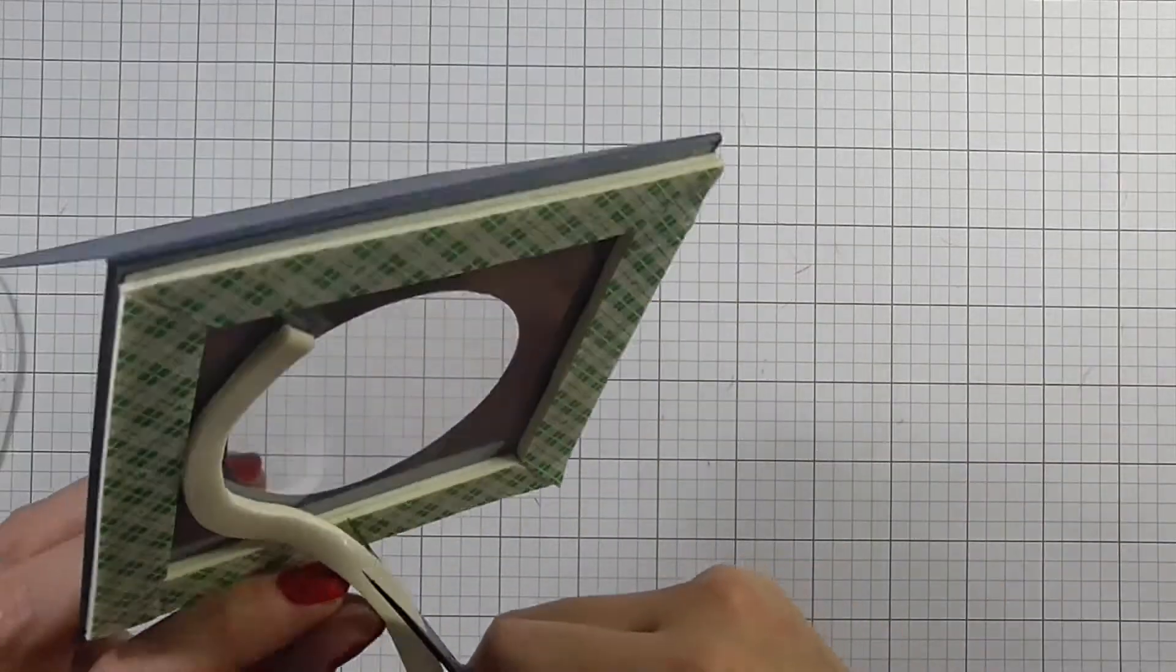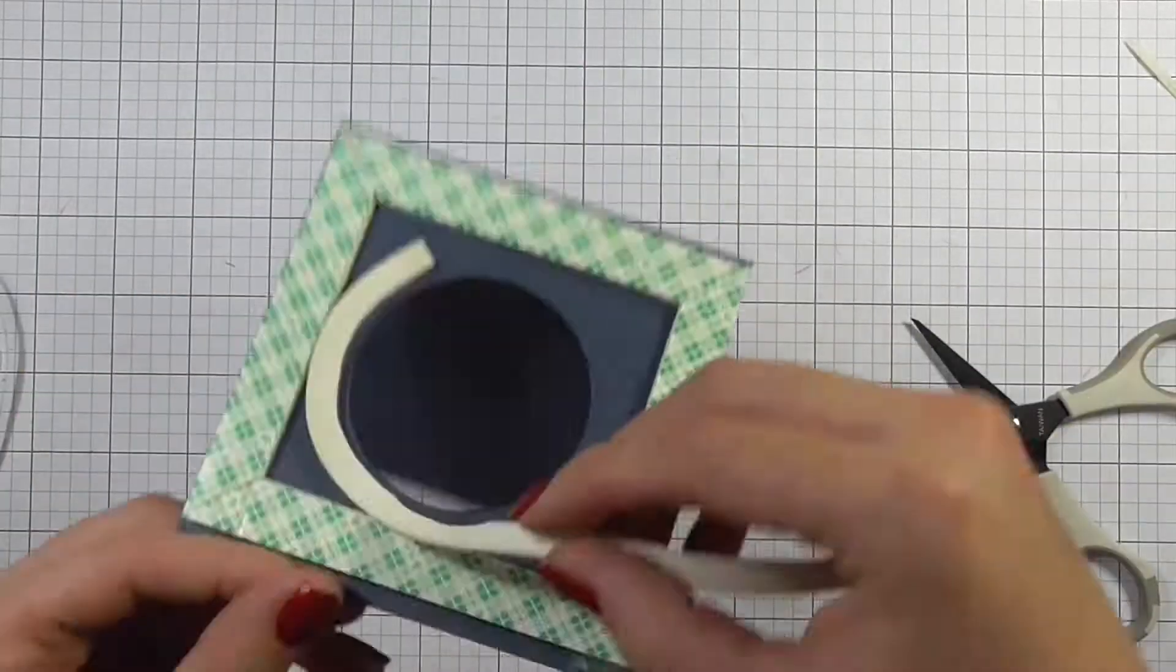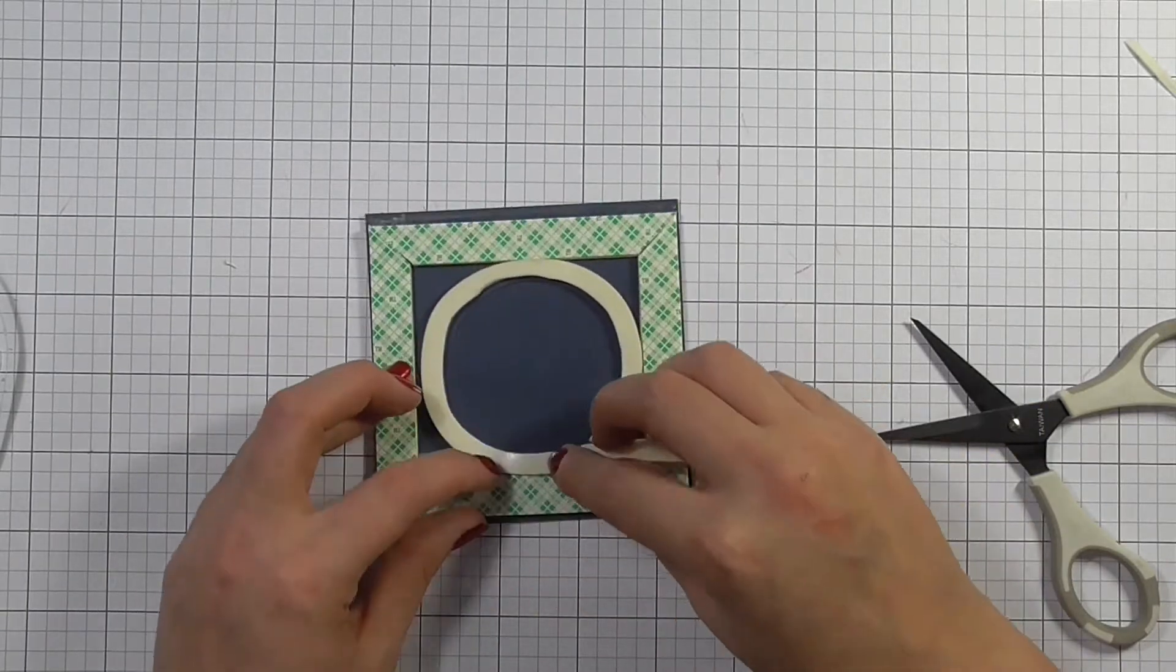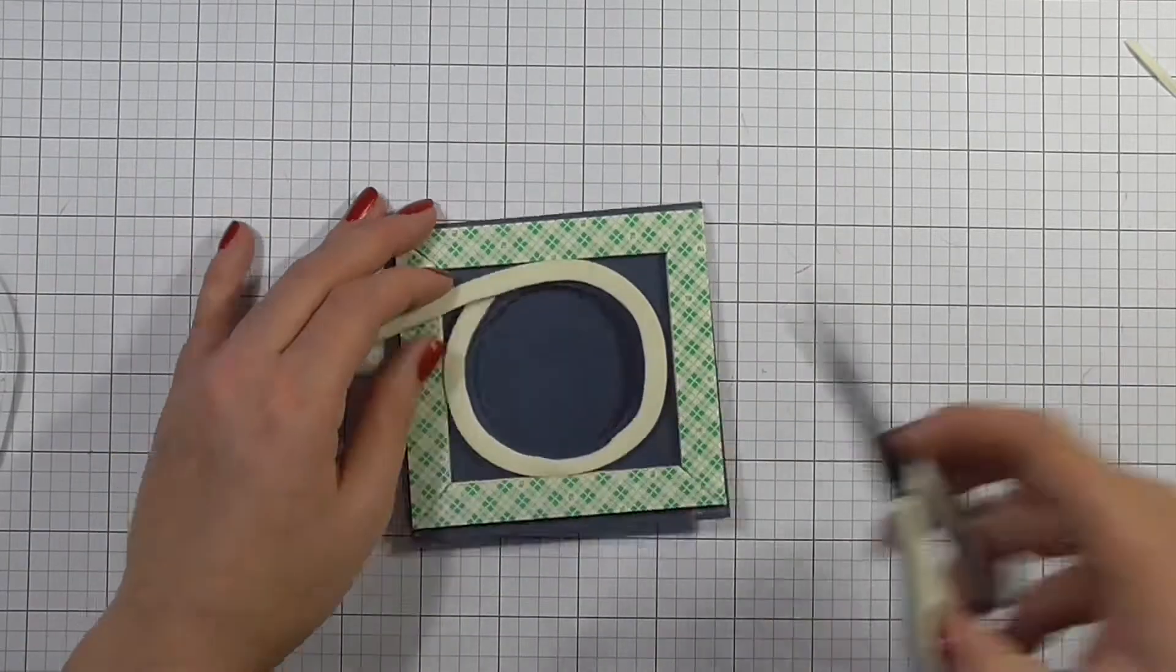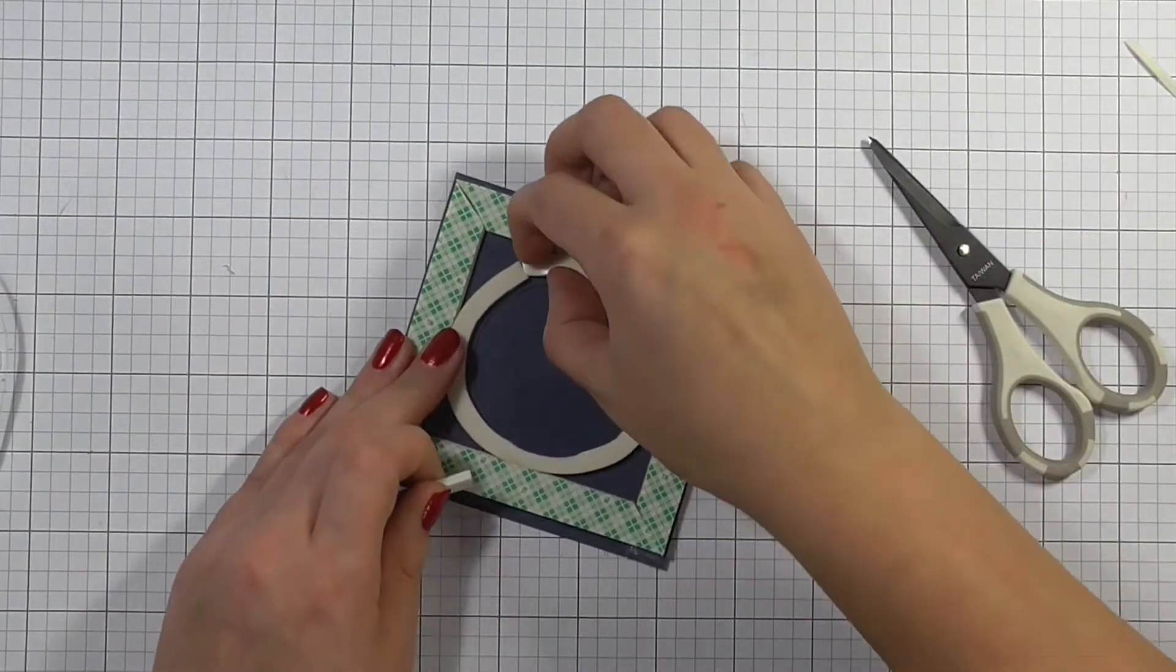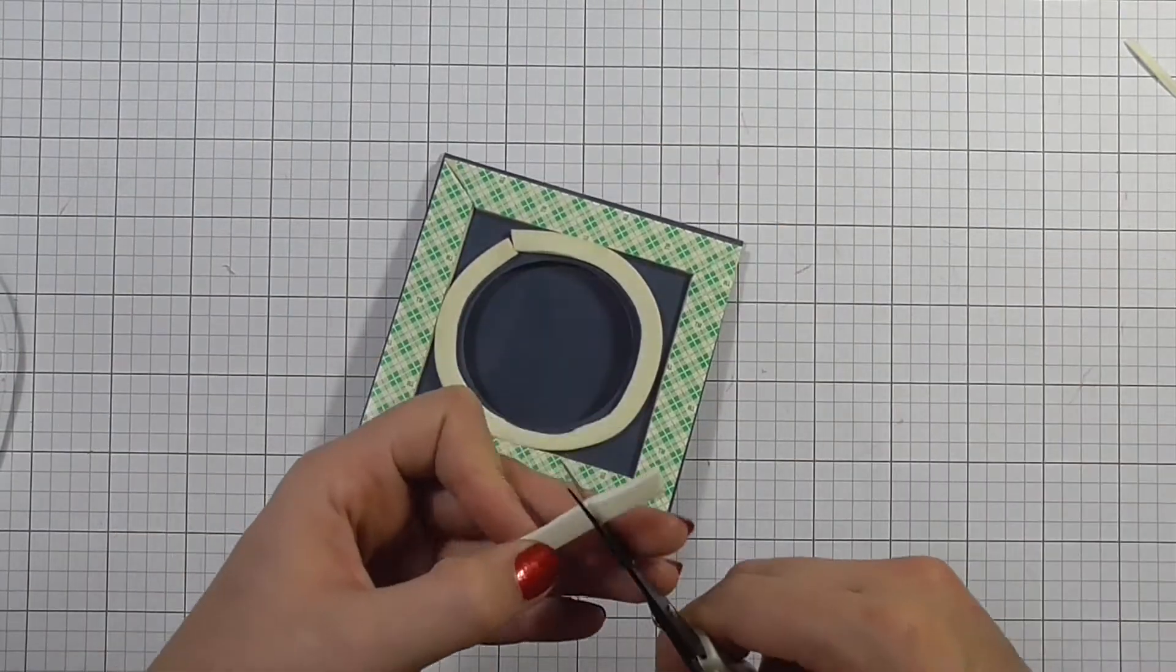So another way to achieve that would be to use craft foam instead and you could just die cut a circle in the middle to have that area for the sequins, but this was just as easy.